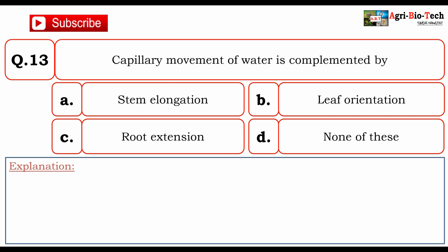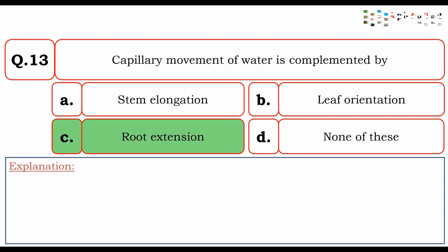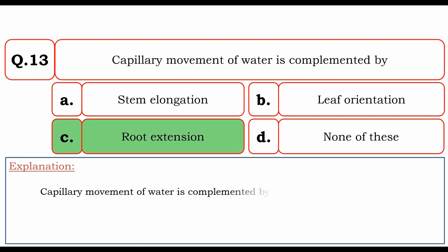Next question: Capillary movement of water is complemented by? The given options are A. Stem elongation, B. Leaf orientation, C. Root extension, and D. None of these. The correct answer is C. Root extension. Capillary movement of water is complemented by root extension. So the correct answer is C.